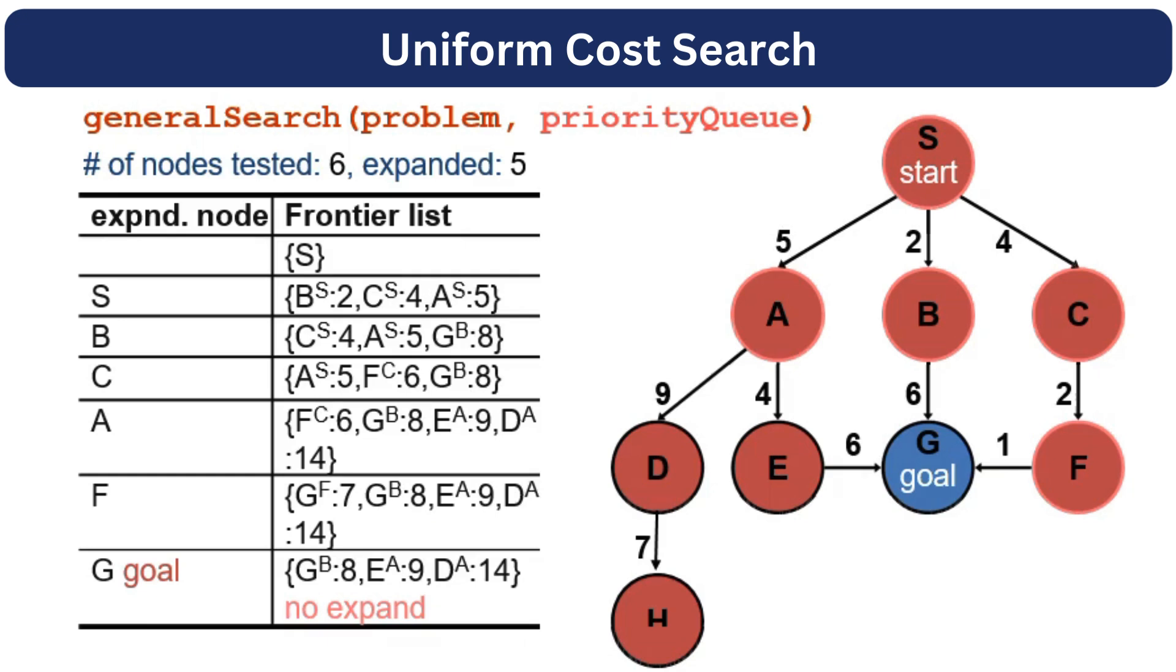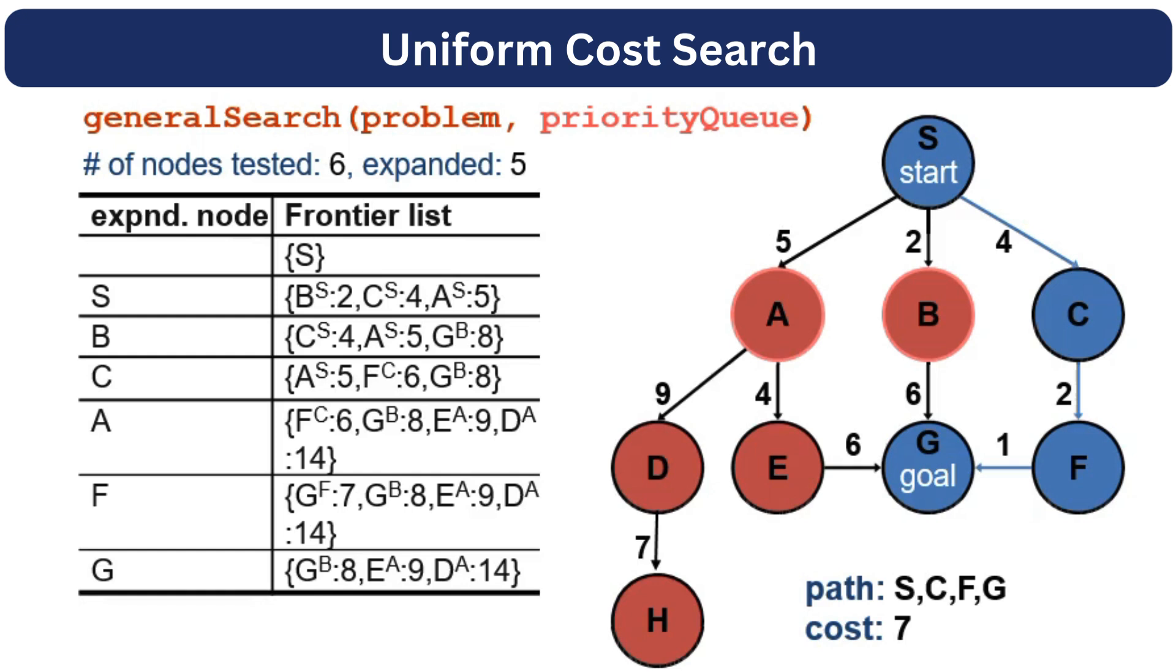So now we will backtrack. The path would be S, C, F and G. And the path cost would be 7. So we can see that among all algorithms, only the uniform cost search could find an optimal solution for this problem.